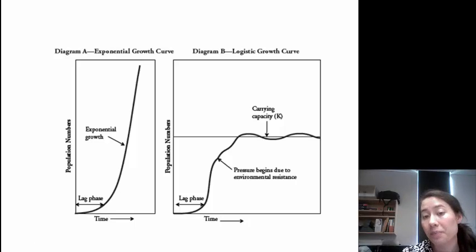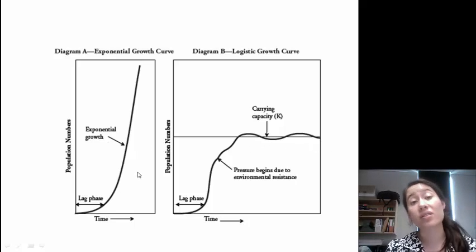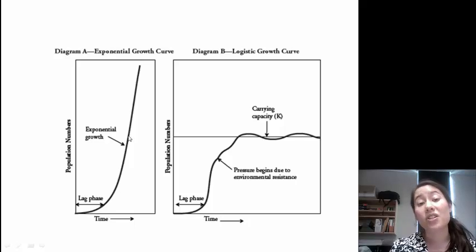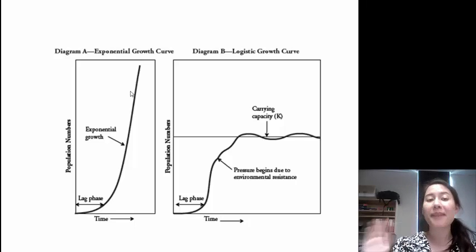This means that some individuals will still be born, some will die, but the overall number will remain relatively constant over time. Over here, none of those environmental constraints exist, so the population will just continue to increase and increase and increase. I hope that has helped you with the population growth packet. If you have any questions, feel free to text or email me and I'll see you soon. Bye.